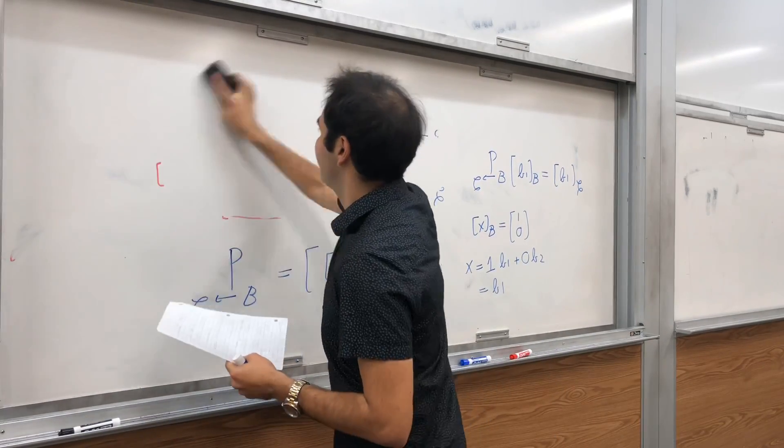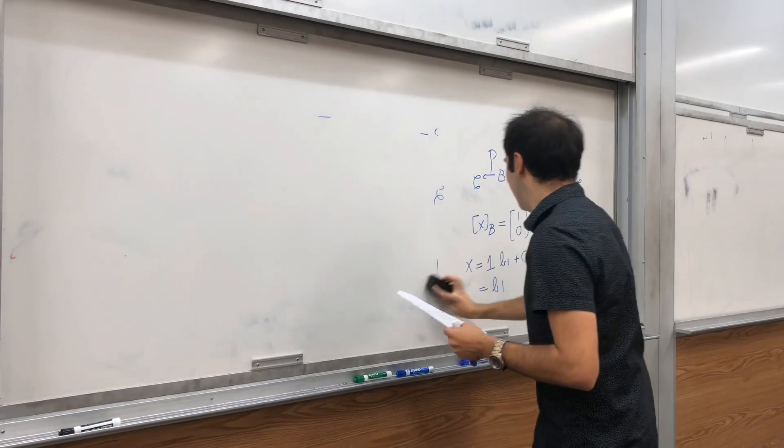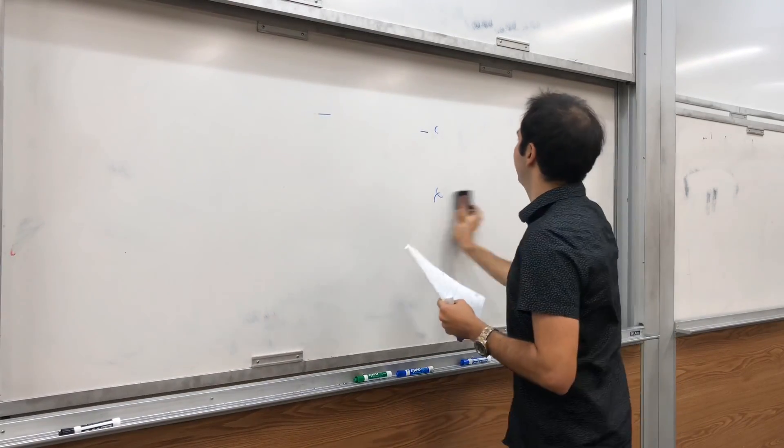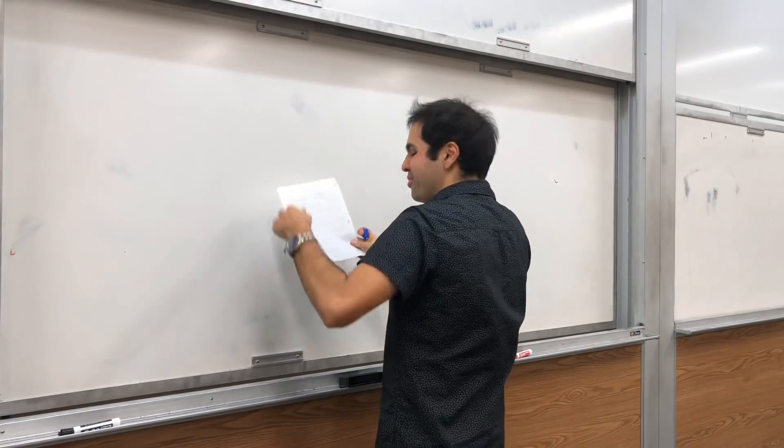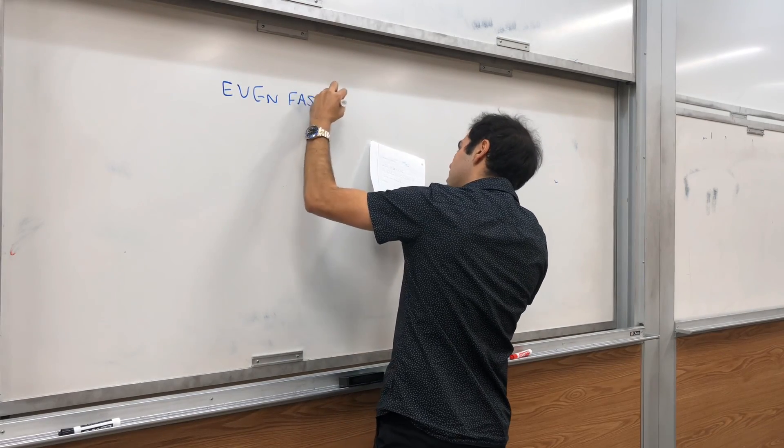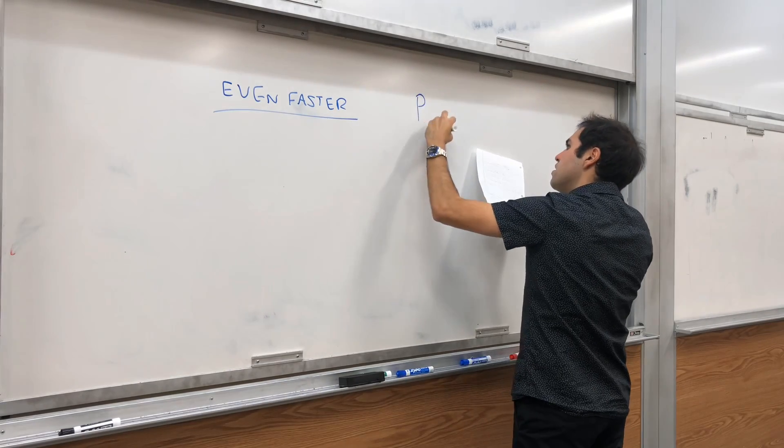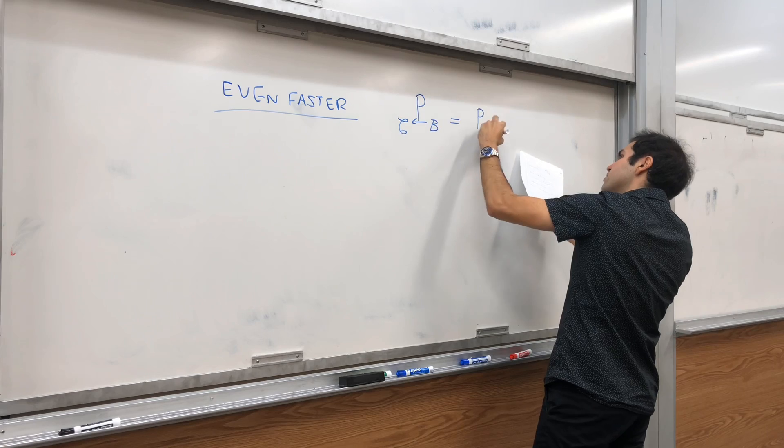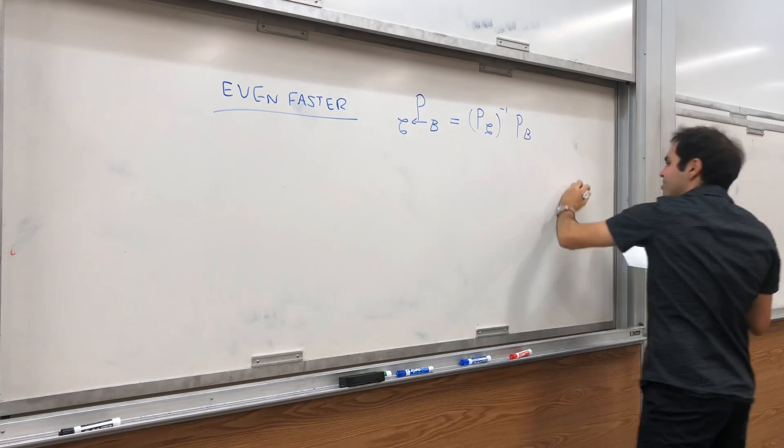So, now, it's an even faster way. And, then, I can finally tell you the answer. So, this is like speed, double speed, quadruple speed if you want. So, even faster. Okay. So, again, PB, C. What we want to do is PC inverse PB.